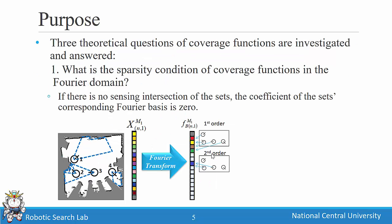Three problems are investigated in this paper. The first question is: what is the sparsity condition in the Fourier domain? We found that if there is no sensing overlap in the spatial domain, when you transfer it into the Fourier domain it will be sparse. For example, if set one and set four have no intersection, their value in the Fourier domain will be zero.